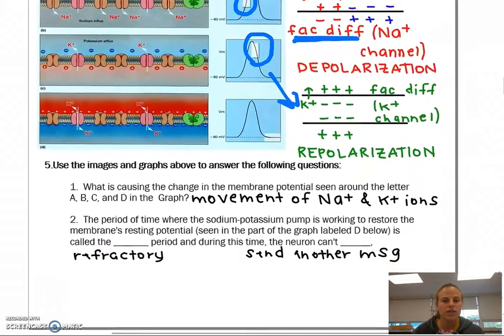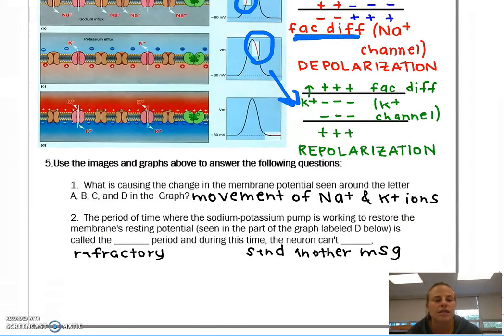So what's causing the change in the membrane potential seen around letters A, B, C, and D in the graph? It's the movement of those sodium and potassium ions, where after the period labeled D, you have your refractory period. And during this time, the neuron can't send another message, because it's during this time that the sodium potassium pump is working to restore that resting membrane potential.